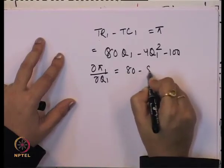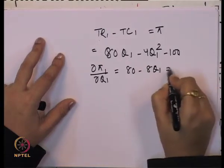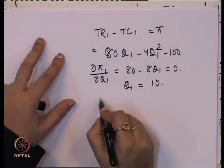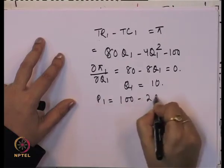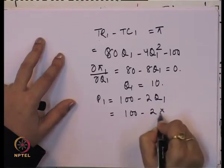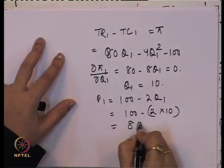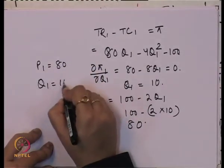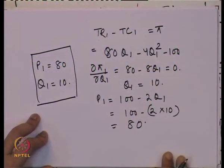Now we find the profit-maximizing outcome for firm 2 independently. TR2 = 100Q2 − 2Q2², and TC2 = 48 + 36Q2 + 2Q2². So profit π2 = 64Q2 − 4Q2² − 48. The first-order derivative gives 64 − 8Q2 = 0, so Q2 = 8. Substituting into P2 = 100 − 2Q2 gives P2 = 84. So firm 2's independent profit-maximizing price is 84.